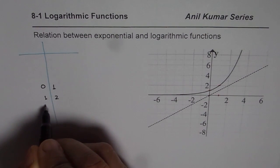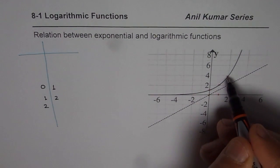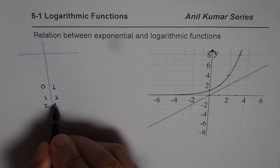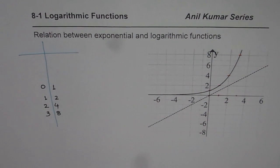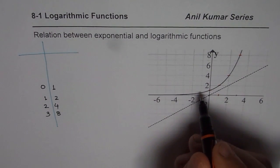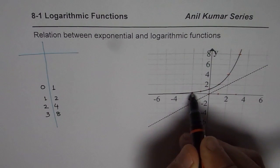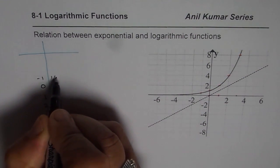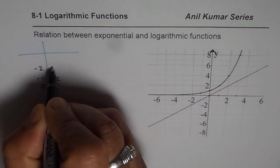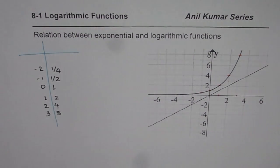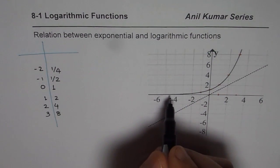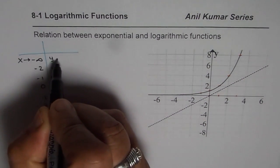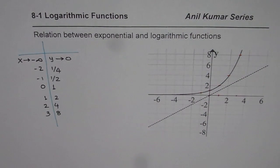At x = 2 we have 4, and at x = 3 it is 8. On the negative side, at x = -1 the value is approximately one half, and at x = -2 it is one quarter. We also notice that as x approaches a large negative value, y approaches 0, so we have a horizontal asymptote at y = 0.